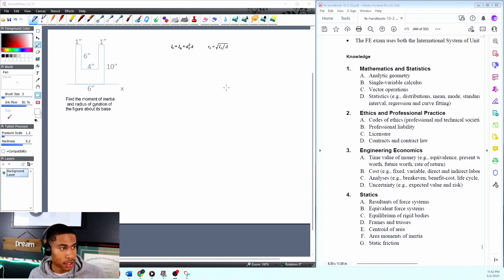When I'm attacking this problem, first thing I ask myself is can I use the FE handbook? And I would say yes. For a moment of inertia, I know that I have a shape here and to get the moment of inertia of this shape I'm going to need to use formulas. I don't know what radius of gyration is, but I'm going to navigate and see if I can find what it is and if there's a formula that I can use.